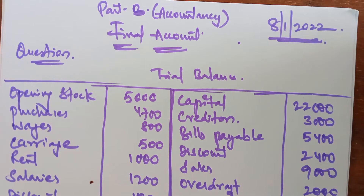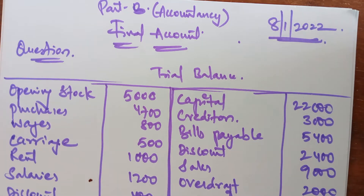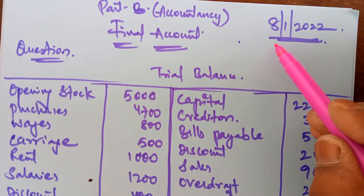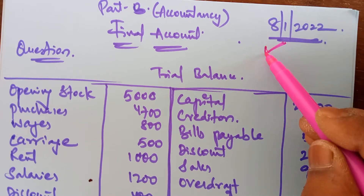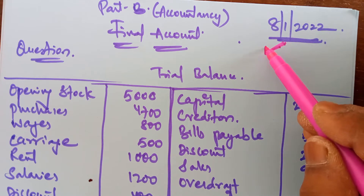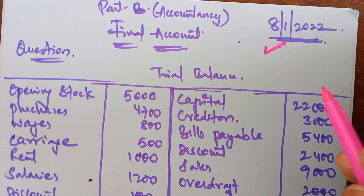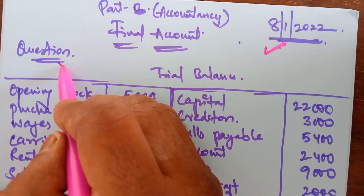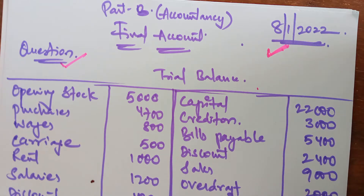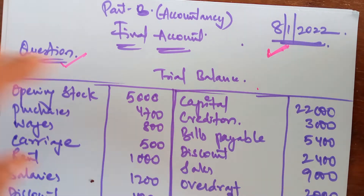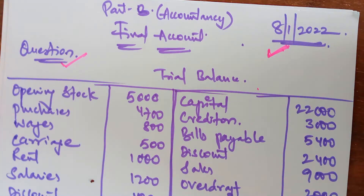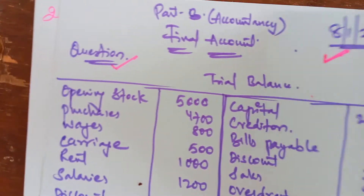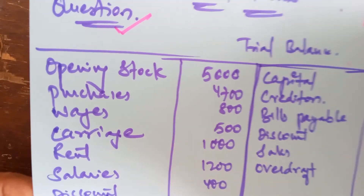Good afternoon brothers. Today let us look at the question for 8th of January. On 8th of January in the exam you have to attempt this question. I will give you this question in the exam and you have to do the final account. This is the trial balance — a question of final account as you know very well. I will show you the question then quickly start the answer.